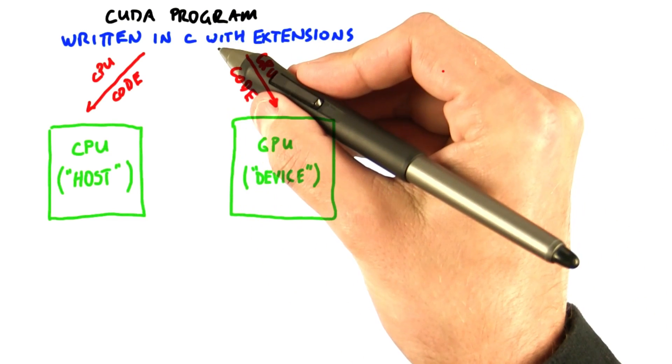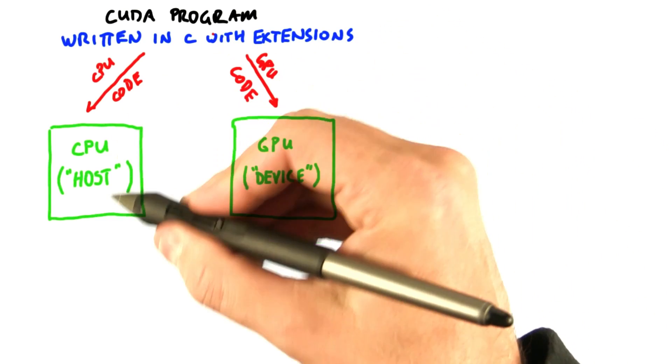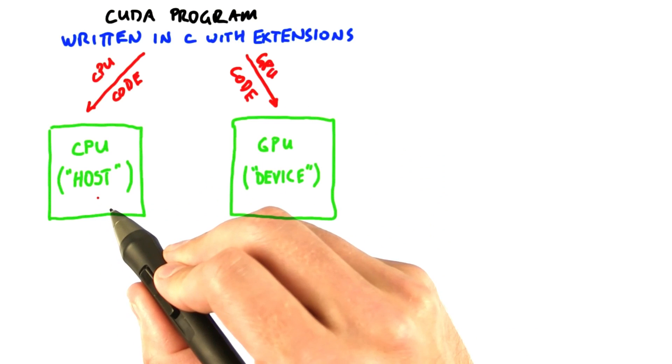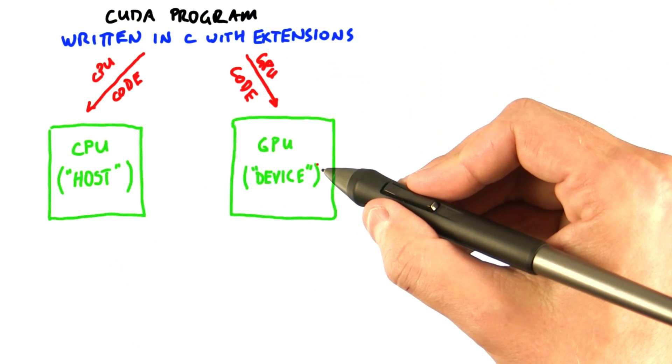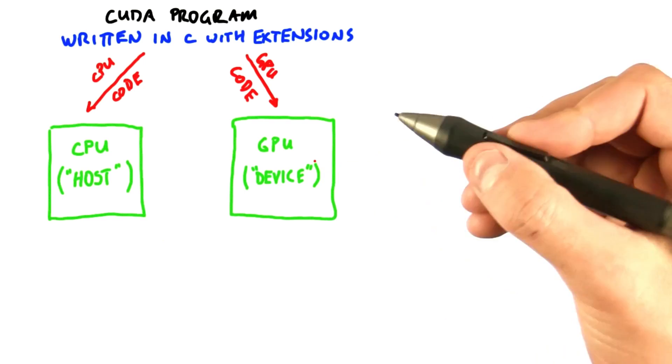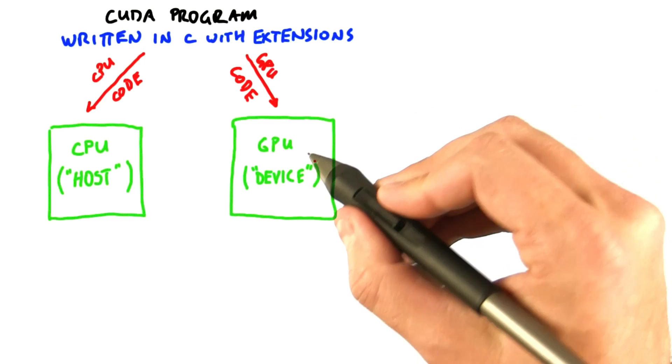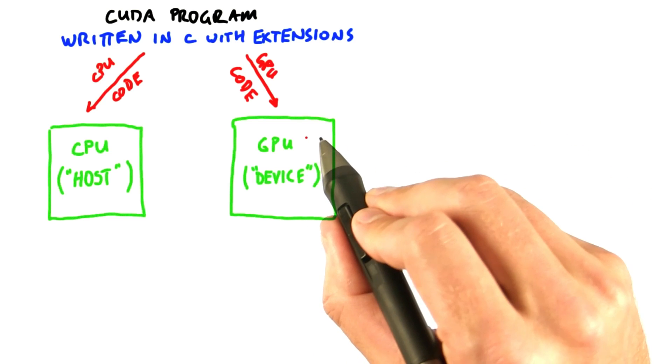Part of your CUDA program is plain C and will run on your CPU. CUDA calls this the host. The other part will run on the GPU in parallel. It's also written in C, but with some extensions that we use to express parallelism. The CUDA term for your GPU is the device.